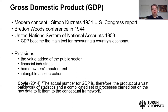A book by Coyle states that the actual number for GDP is the product of a vast patchwork of statistics and a complicated set of processes carried out on raw data to fit them to the conceptual framework. The main point is to emphasize that there are certain conventions adopted in this measurement — concerning the value added of the public sector, financial industries, homeowners' imputed rent, and the measurement of intangible assets. GDP is not some kind of word of God; there are agreed-upon practices, and some of these practices can be criticized.